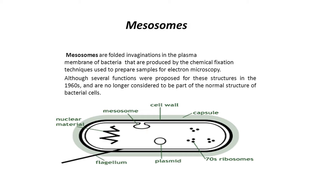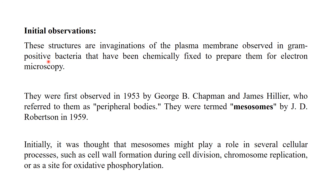Membrane invagination in the plasma membrane is called the Mesosome. These structures are invaginations of plasma membranes observed in gram-positive bacteria that have been chemically fixed to prepare them for electron microscopy.